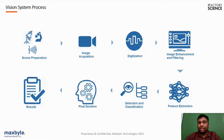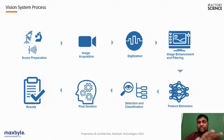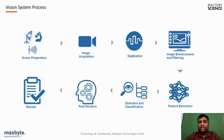Image acquisition happens, and then images are sent for analysis and processing. Steps like image enhancement, filtering, feature extraction, detection, and classification are key technical steps inside the vision system — how images are captured, how decisions are made, and how results are published. These represent the more in-depth technical details of how a vision system works.